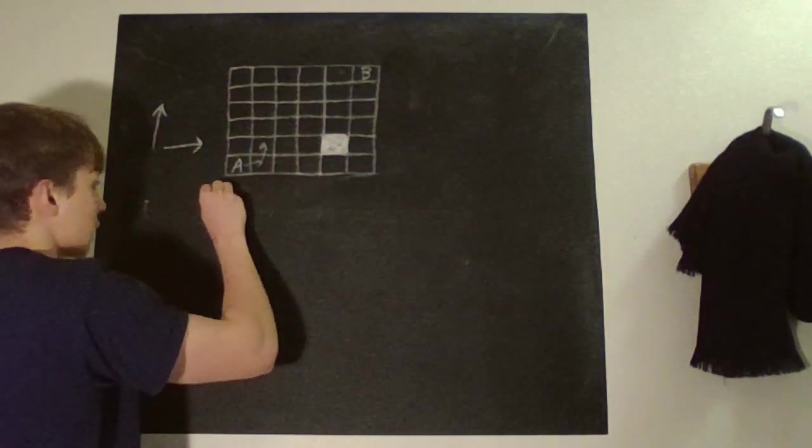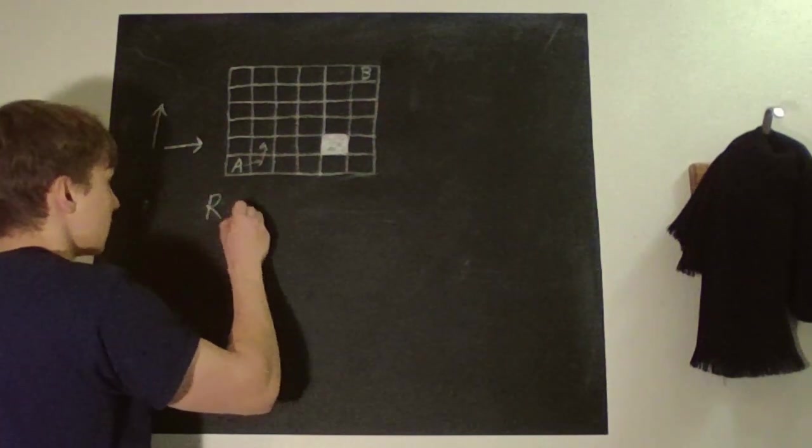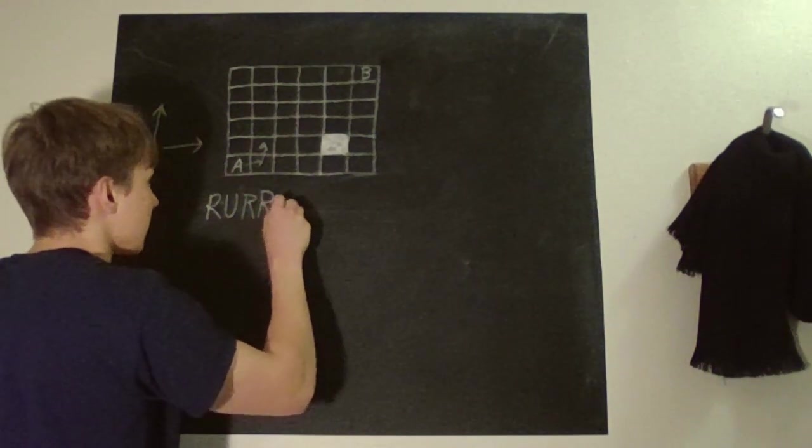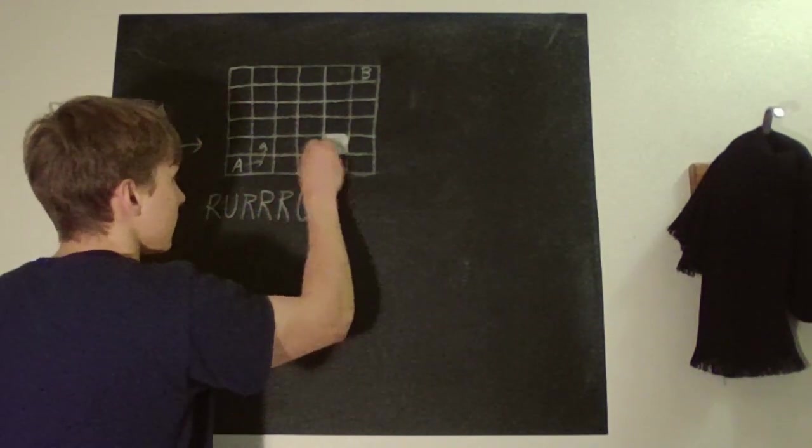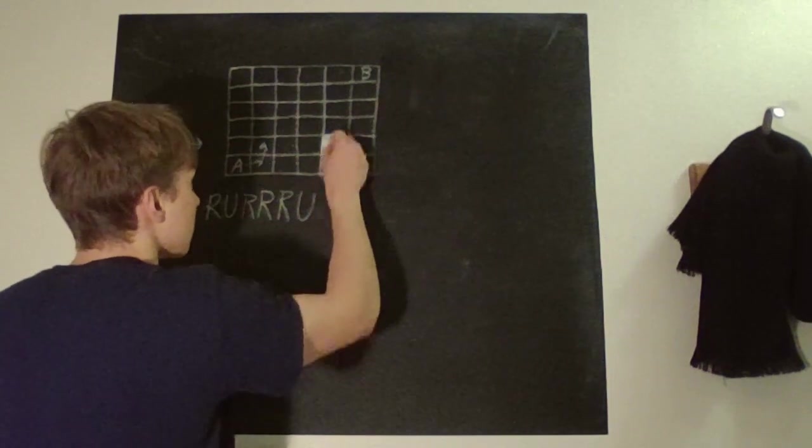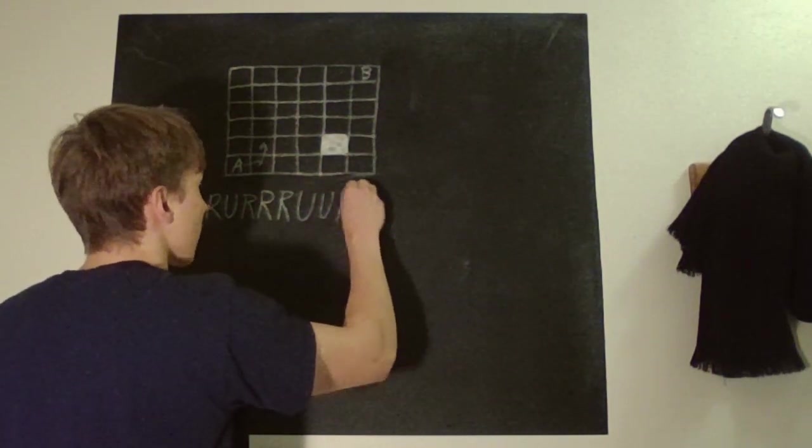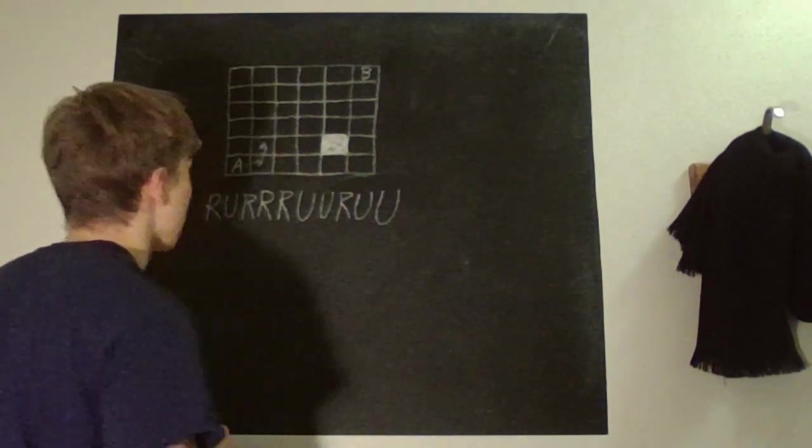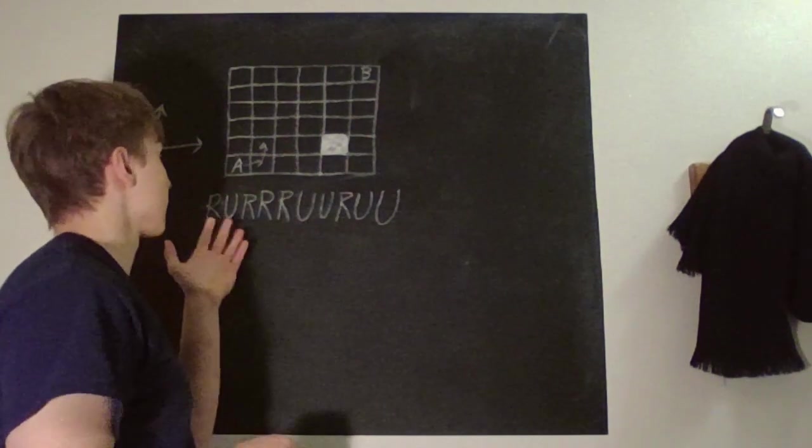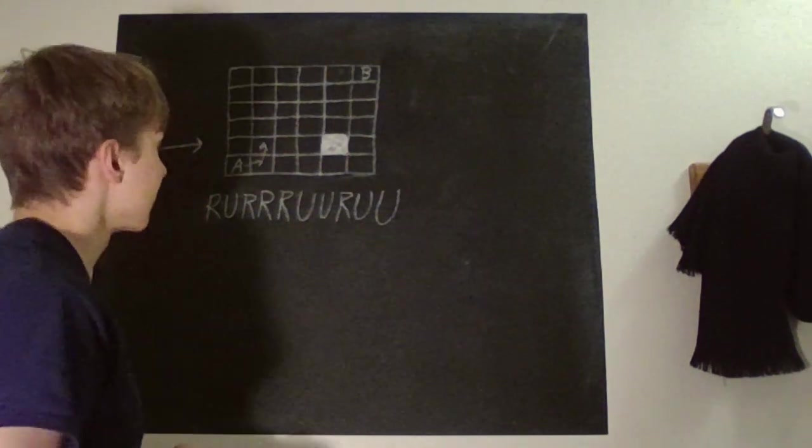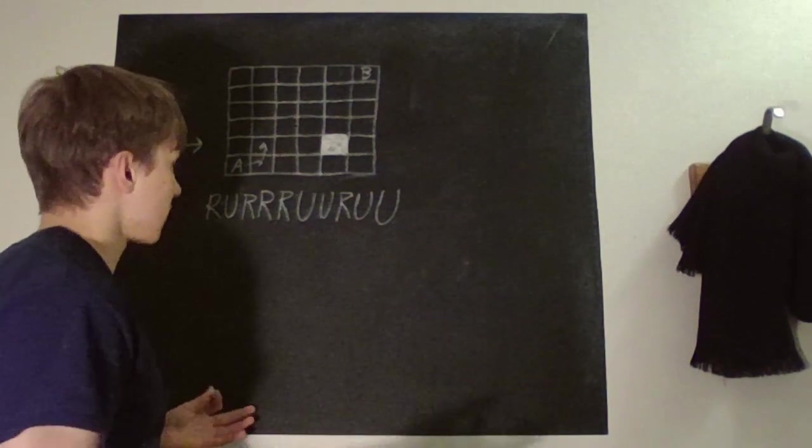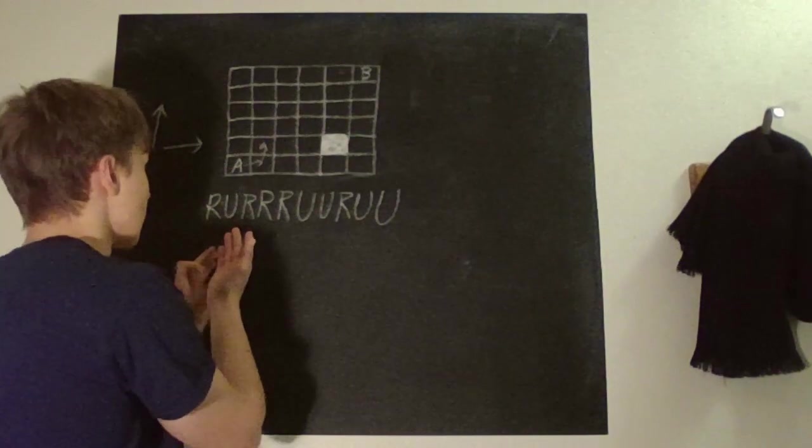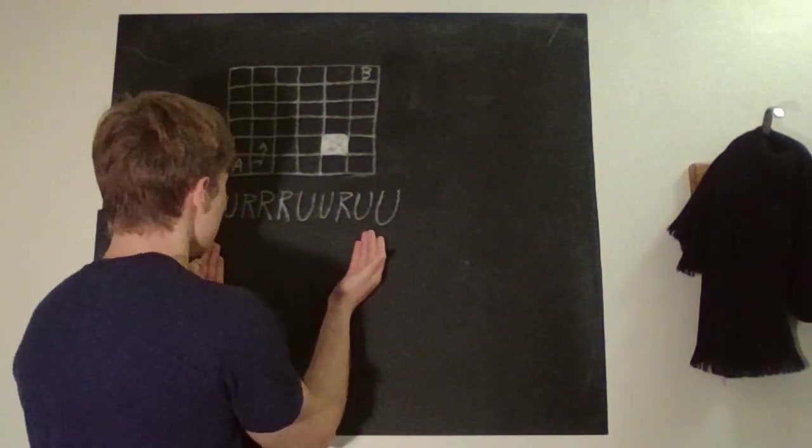Because we disregard this block thing. That move pattern would, for example, look like, you can think about this as some kind of code. So we have right, upward, right, right, right, up. And then I move upwards, upwards, right, upwards, upwards. And here we have 5 R's and 5 U's. So the question then is, in how many ways can we arrange 5 R's and 5 U's?